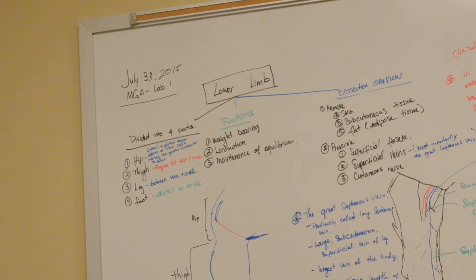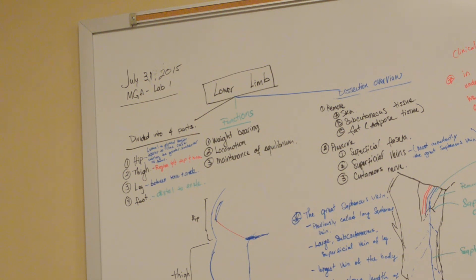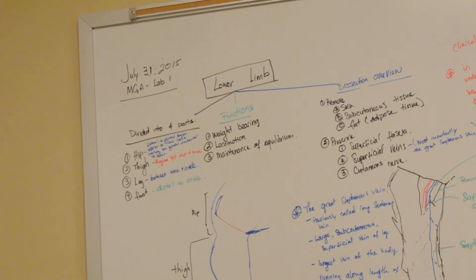Medical Gross Anatomy Lab 1: The Lower Limb. The lower limb is divided into four parts: the hip, the thigh, the leg, and the foot. The hip is a region lateral to the gluteal region, inferior to the iliac crest, overlying the greater trochanters of the femur. The thigh is the region between the hip and the knee. The leg is the region between the knee and the ankle. The foot is distal to the ankle.